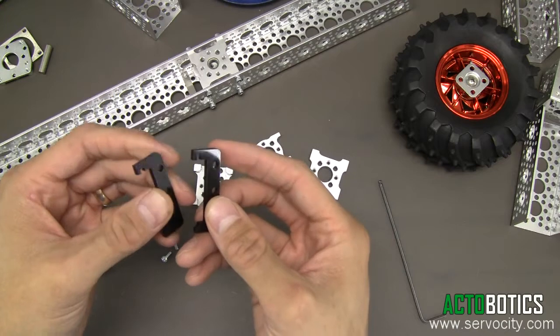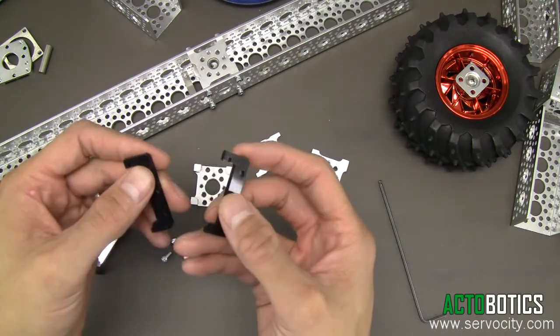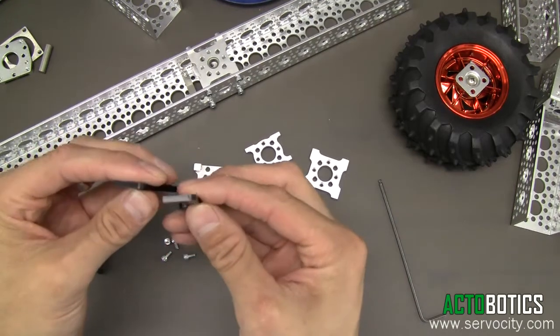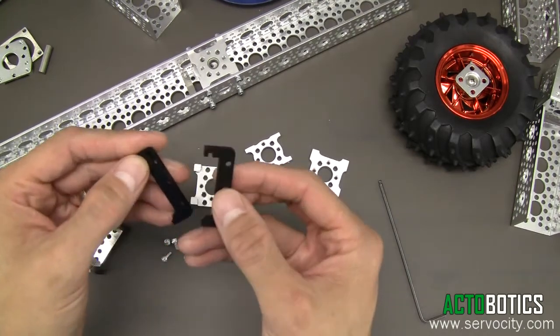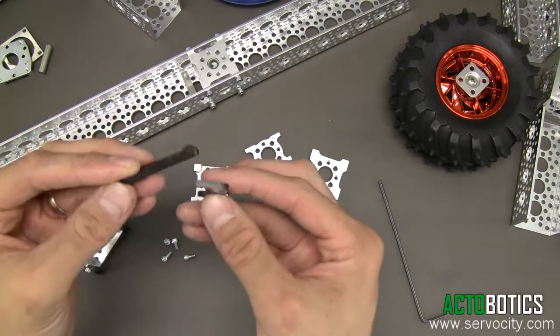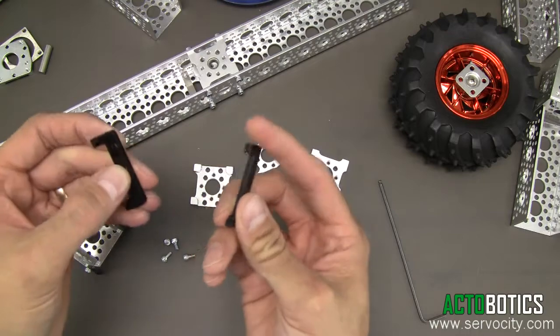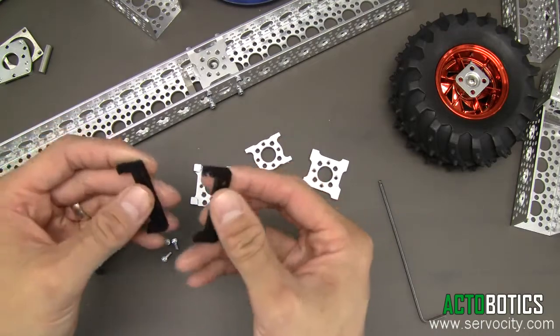They're made out of Delrin plastic, which has really good wear characteristics. It's the same kind of plastic that our sprockets, gears, and bushings are made from. We decided to use it for our new line of Channel Sliders.